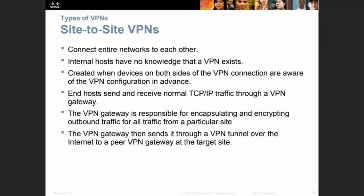Internal hosts have no knowledge that the VPN exists — it is transparent for them. The VPN is created when devices on both sides are aware of the VPN configuration in advance. End hosts send and receive normal TCP/IP traffic through a VPN gateway. The gateway is responsible for encapsulating and encrypting outbound traffic for all traffic from a particular site.